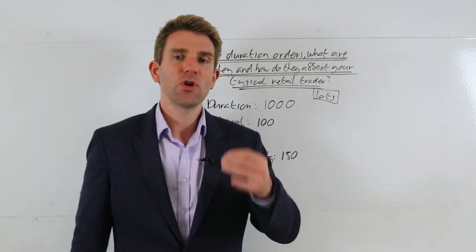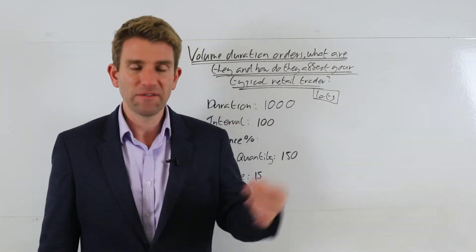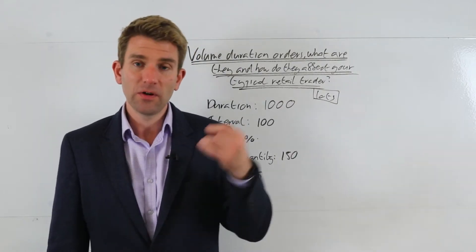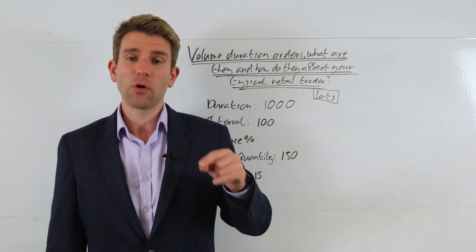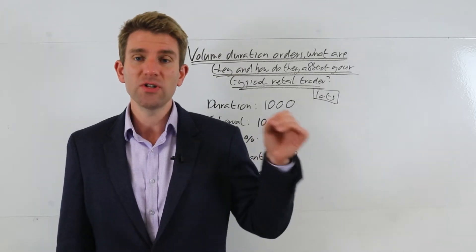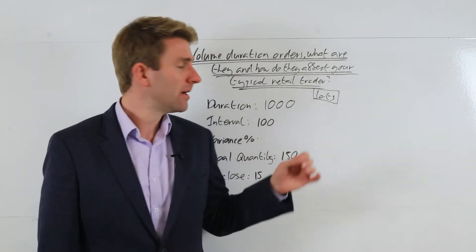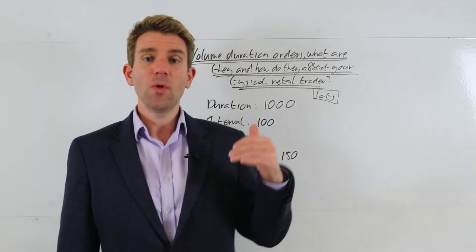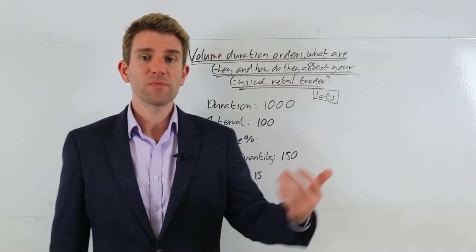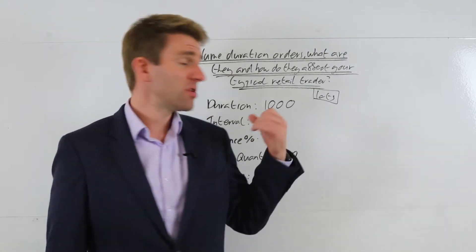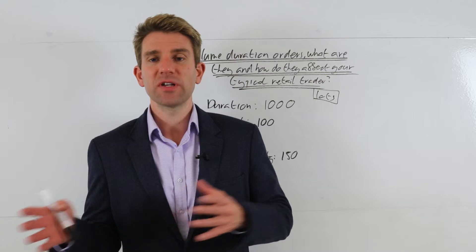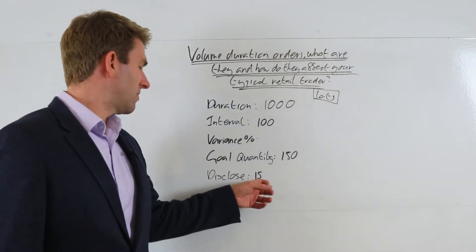By the way, the variance is just to try and stop predatory algos finding them and front-running them. Because if you think about it - and I've done a video on this quite a while ago, actually, it's called Predatory Algos - there are algos out there who will try to sniff out, for want of a better word, these types of algos, knowing that they're doing a certain amount of volume, and then front-run those algos, making these guys pay up, making some money off them. So you can have little things like a variance percentage where you can dial the percentage of the order up and down.